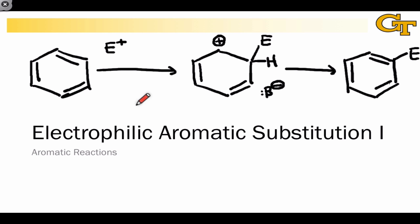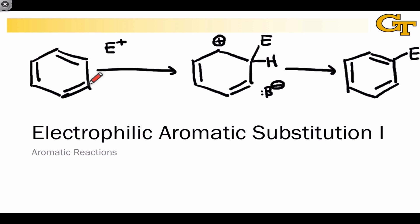In this lesson, we're going to look at specific examples of electrophilic aromatic substitution reactions of benzene. Keep in mind that electrophilic aromatic substitution is this general reaction type where an electrophile engages with the aromatic ring, and the aromatic ring behaves as a nucleophile, or Lewis base.